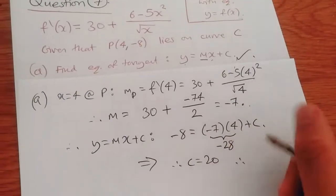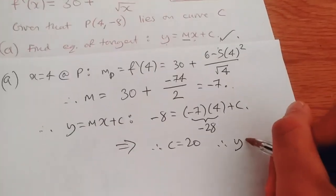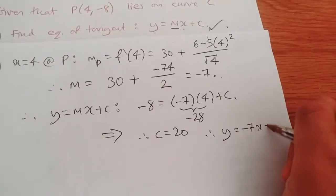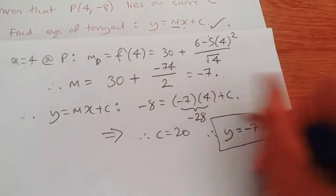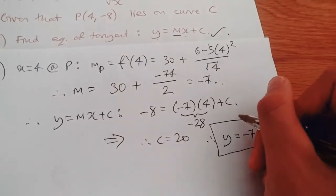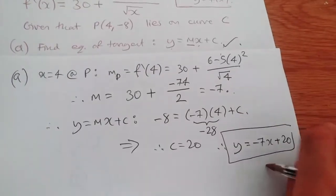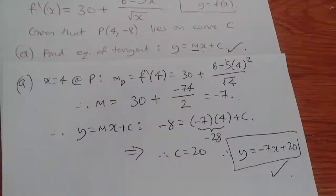Hence, our equation of tangent is now y equals minus 7x plus 20. And that's it, this equation at the point, the equation of tangent at this point. Okay, super. So let's move on to part b.